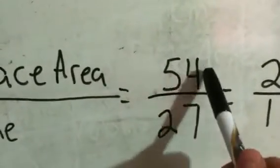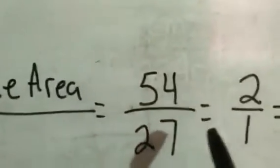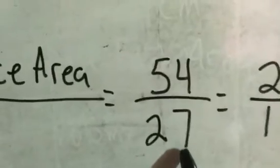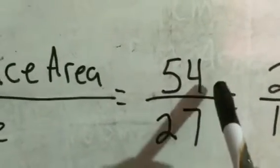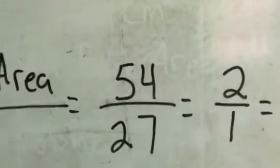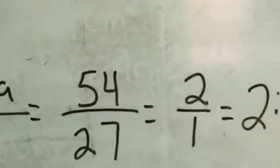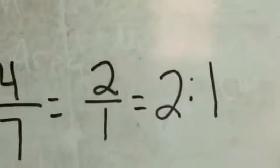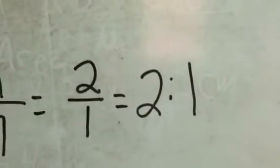So it was 54 centimeters squared for the surface area and then 27 cubic centimeters for the volume. And once we do that, it's a simple mathematical operation, divide 54 by 27, and what you get is 2 over 1, which, you know, I know as a fraction is just 2, but we put it as a 2 to 1 surface area to volume ratio.